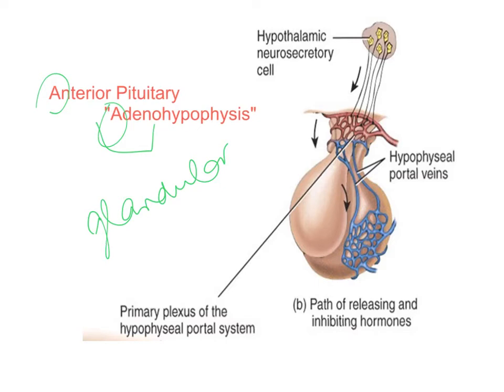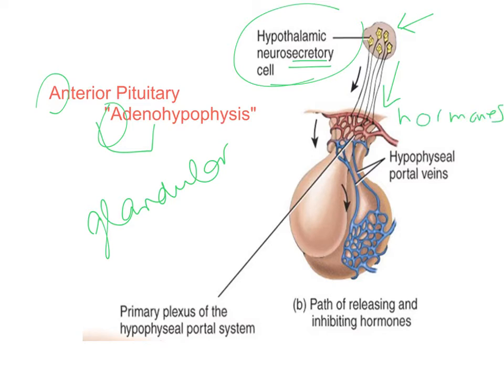Both the anterior and posterior pituitary involve hypothalamic neurosecretory cells. These cells receive input from other parts of the brain. They are neurosecretory in that they receive electrical signals and, like other neurons, generate electrical signals — but this results in the release of a hormone rather than a neurotransmitter. That's why they're called neurosecretory cells: they release hormones in response to electrical stimulation coming from other parts of the brain to the hypothalamus.